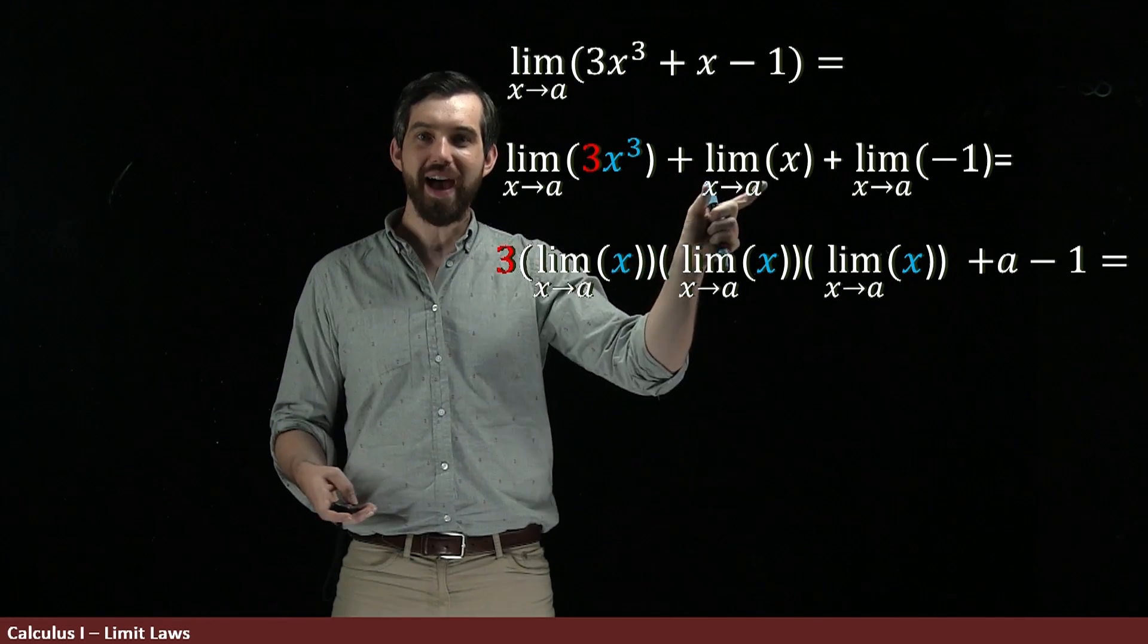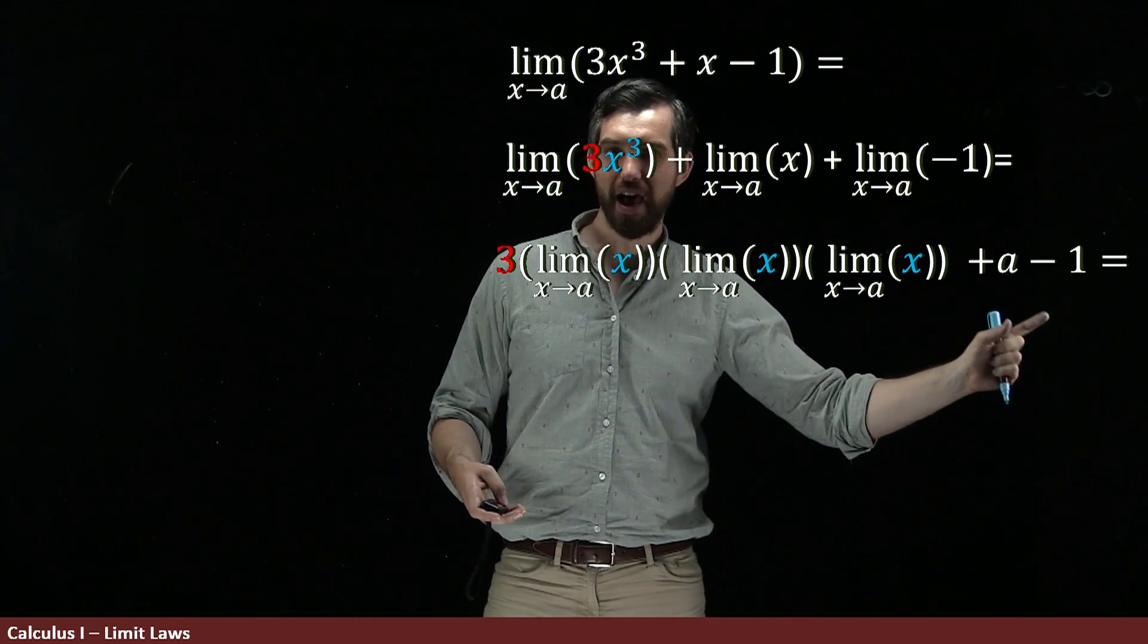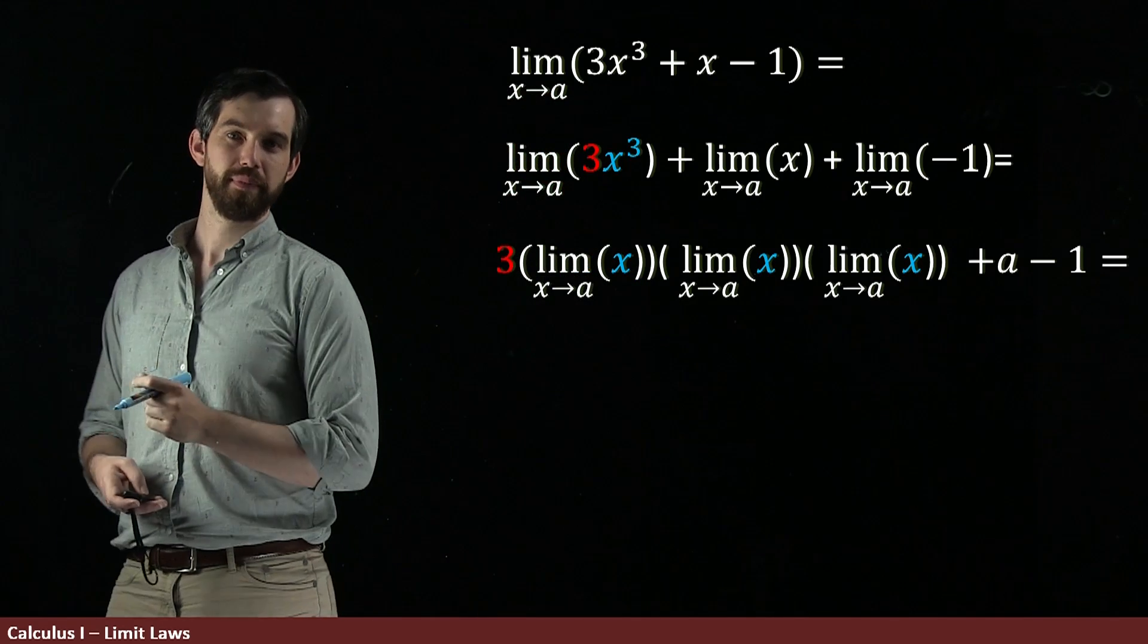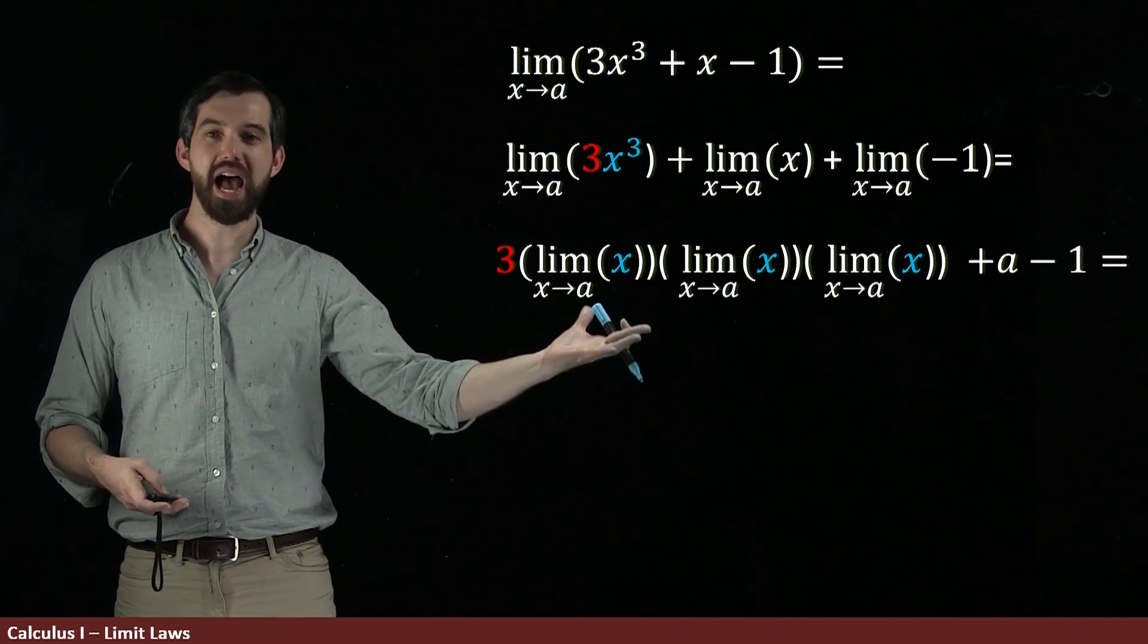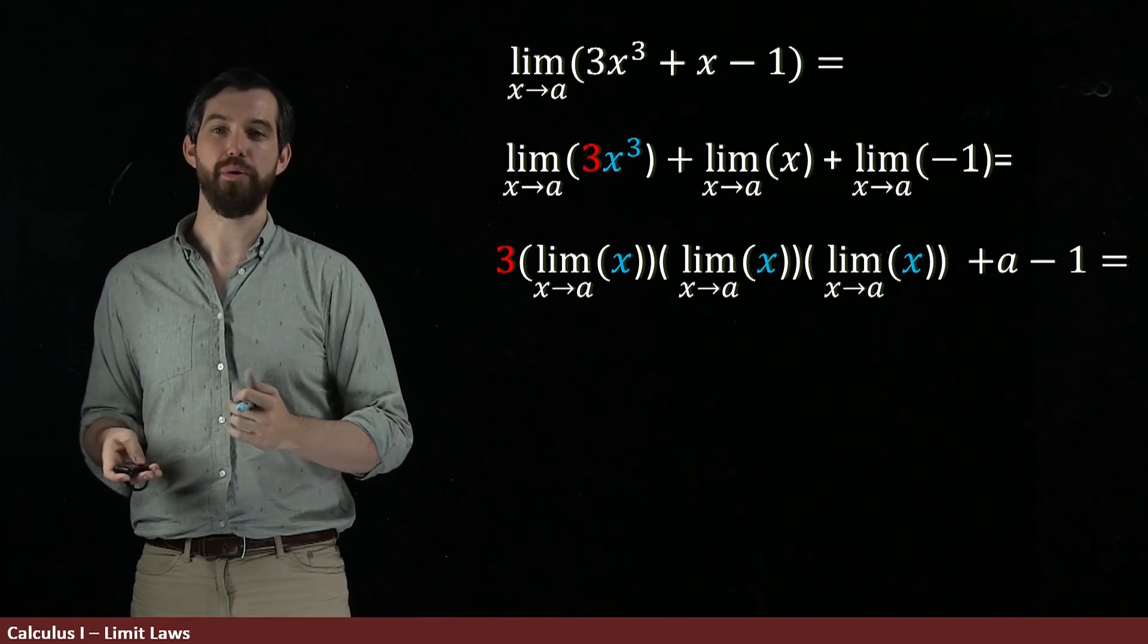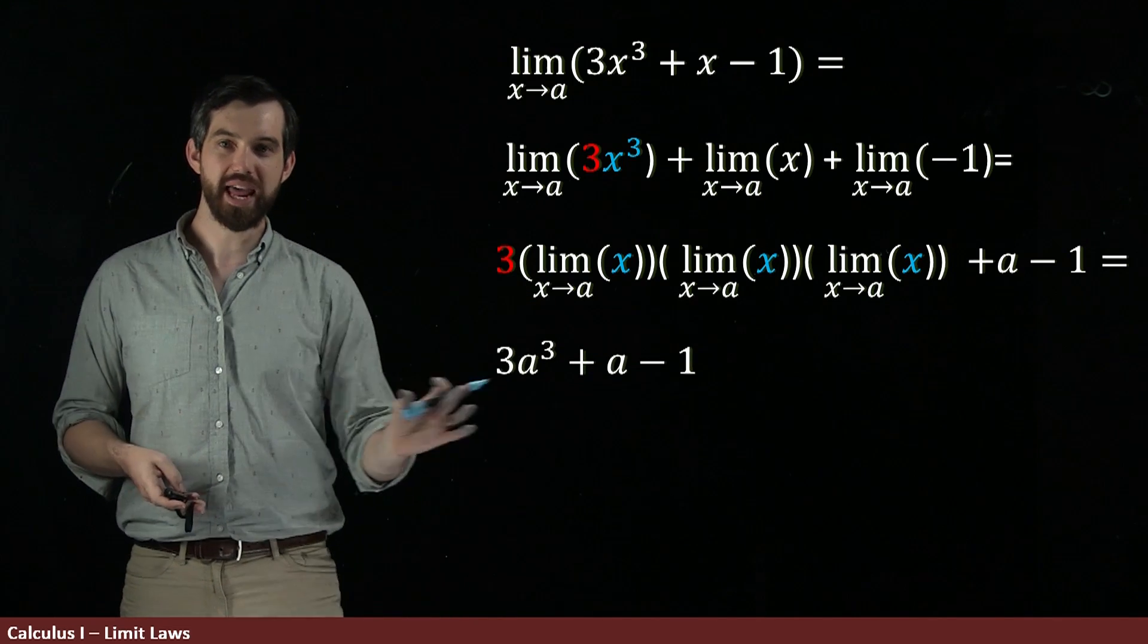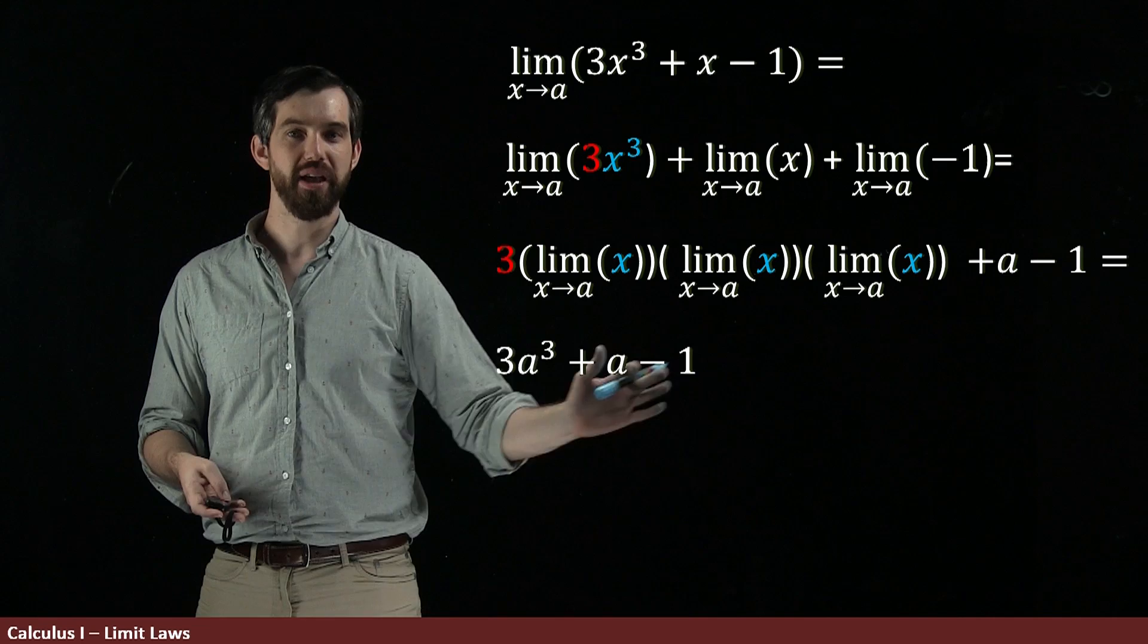And then, for the limit of x and the limit of the minus 1, I just plug in those values we just saw, the a and the minus 1. And now, I've taken the x cubed down to the limit of x. We've just seen what that was. You plug in a. And so, what we're going to get is 3a cubed plus the a minus 1.